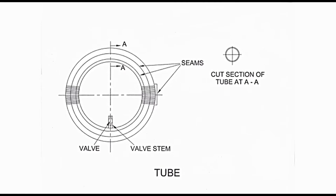Diagram on right side presents cut section of tube at AA. Tube attains a perfect circular section when fully inflated. The diameter of tube shown in cut section is such that it accommodates inside tire comfortably.